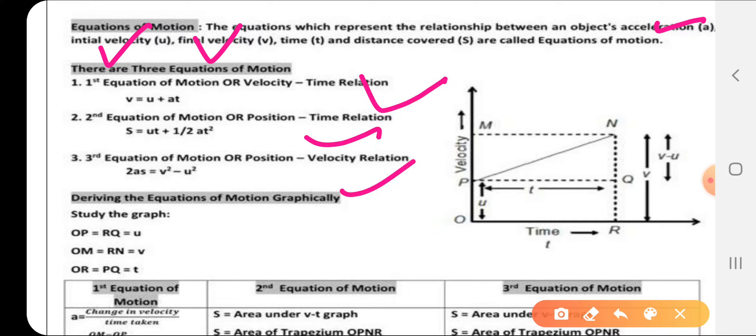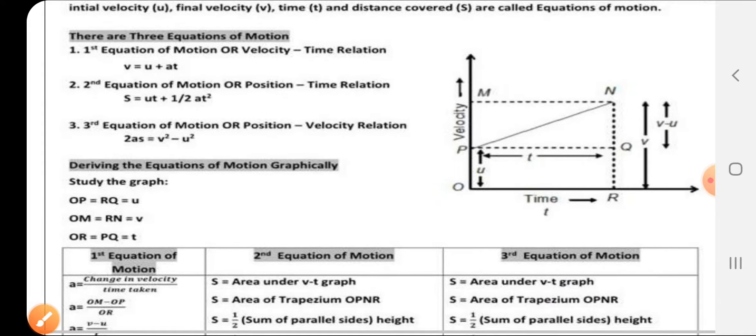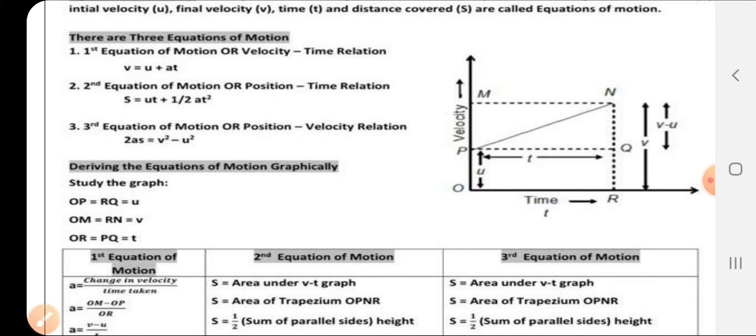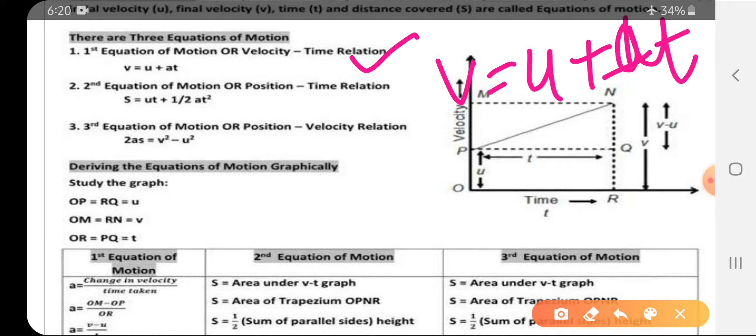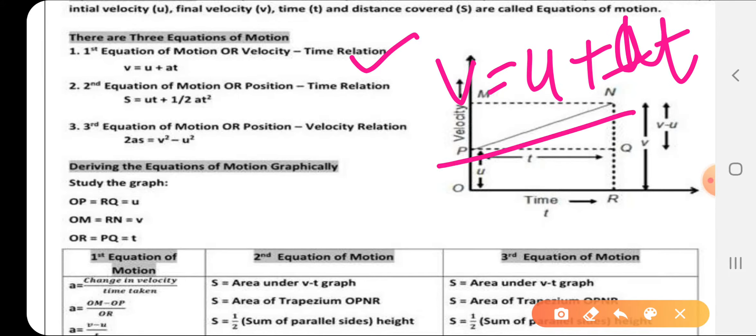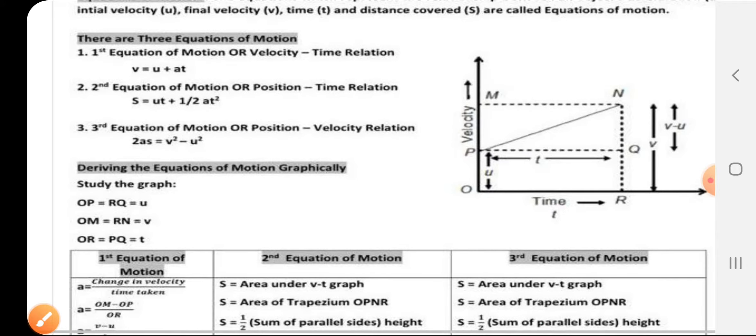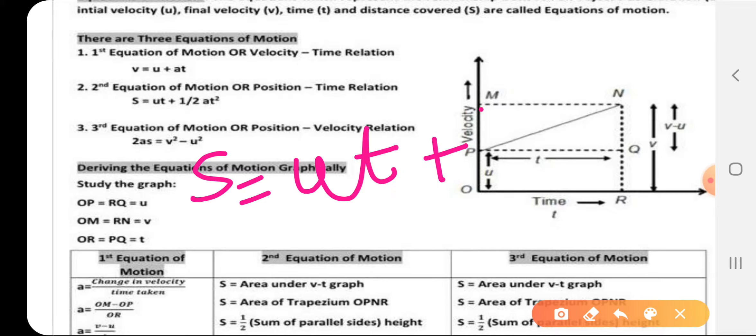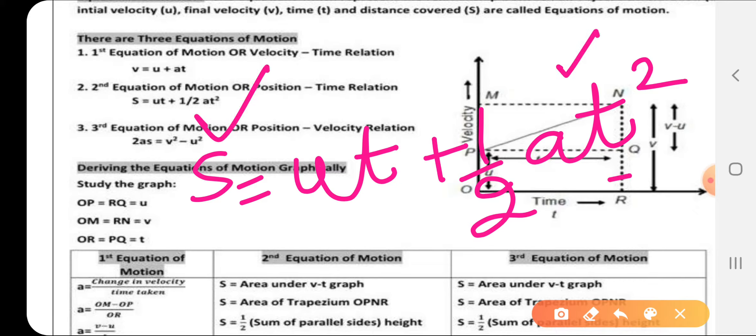There are basically three equations of motion. The first one is the velocity-time relation: v = u + at. This is the first equation. The second is the position-time relation: s = ut + 1/2 at². This is the second equation.